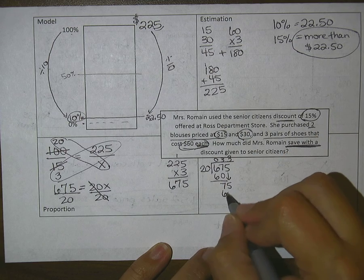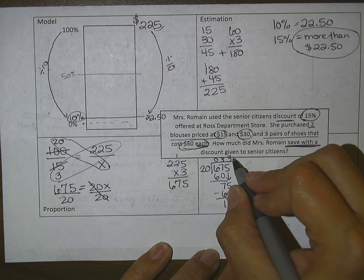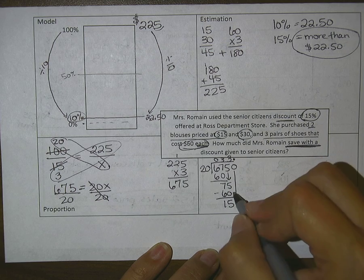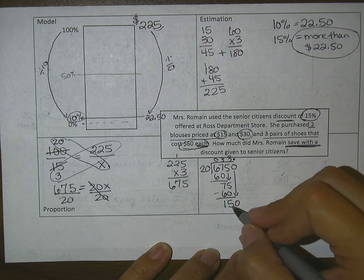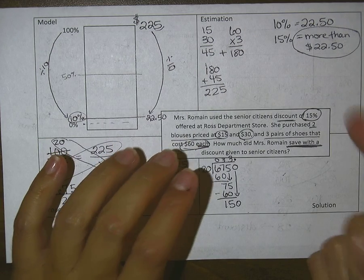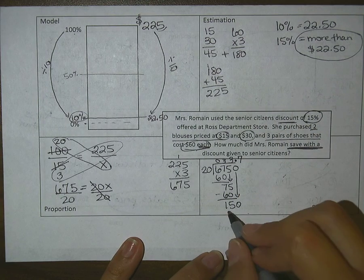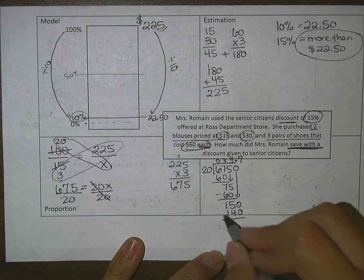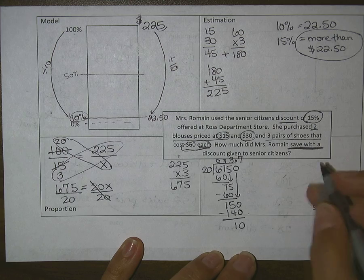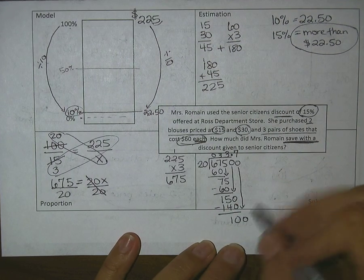20 into 75, that's 3 times, which is another 60. Subtract, I got 15, so I'm going to add a decimal here and add a 0. 20 into 150, let's see, 7 times gives me 140. Now 20 into 100, 5 times.